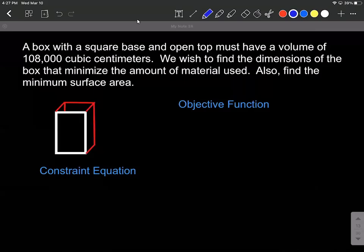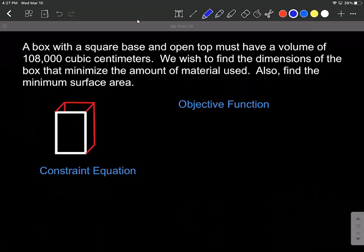All right, let's work on an optimization problem. In this one we have a box with a square base and open top that must have a volume of 108,000 cubic centimeters. We wish to find the dimensions of the box that minimize the amount of material used. Also we want to find the minimum surface area.